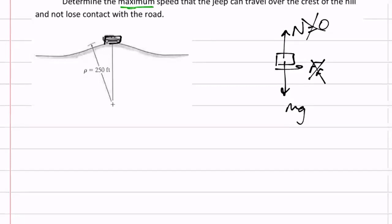So the free-body diagram is really just the mg. I drew my object, I drew the forces acting on it, now let me define my axes. Should I just do a usual XY? No — it's in a circular path, so let me define normal and tangential. What direction is normal? Normal is always into the curve. So I would say normal is that direction into the curve, and to the right is tangential.